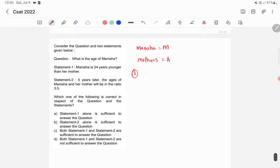Statement 1 says that Manisha's age is 24 years younger than her mother. So this is the equation that we can get from statement 1.